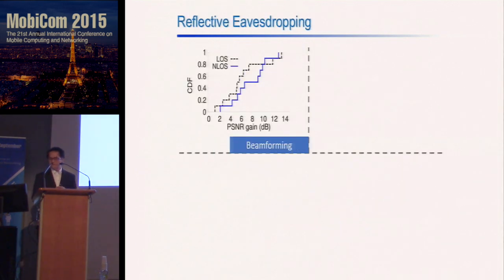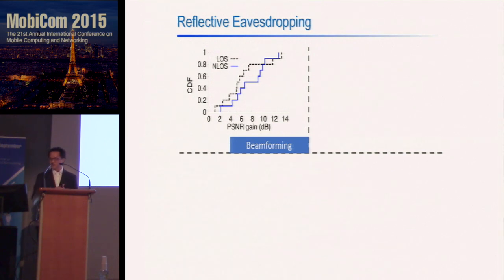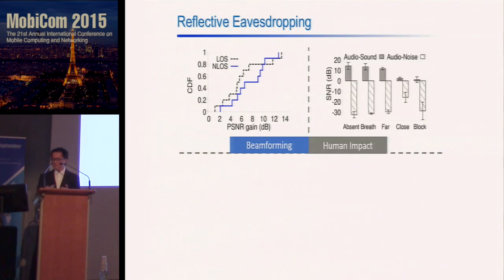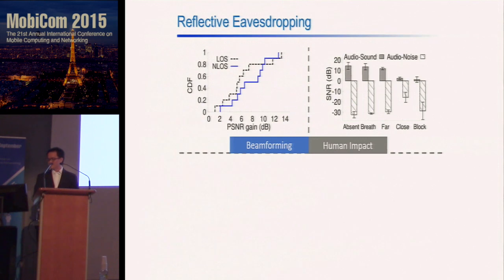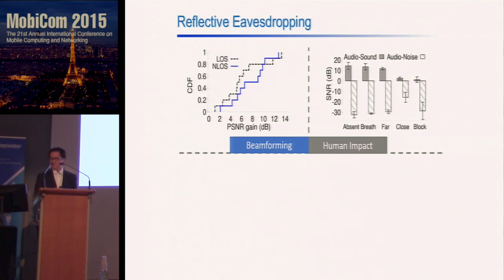We first evaluated the beamforming performance in loudspeaker and non-loudspeaker environments. Varying the loudspeaker location over 10 different positions, we achieved on average a 7 dB PSNR improvement. We also evaluated the impact of human movement, placing the loudspeaker two meters from the transceiver. Audio quality degrades significantly only when a human is walking close to the antenna within one meter or blocking the path between the antenna and the loudspeaker.